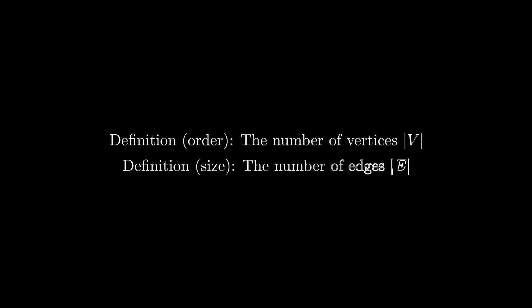Let's discuss some key terminology involving graphs. We define the order of a graph to be the number of vertices, denoted as n or |V|, and the size of a graph to be the number of edges, which is denoted either as m or |E|.